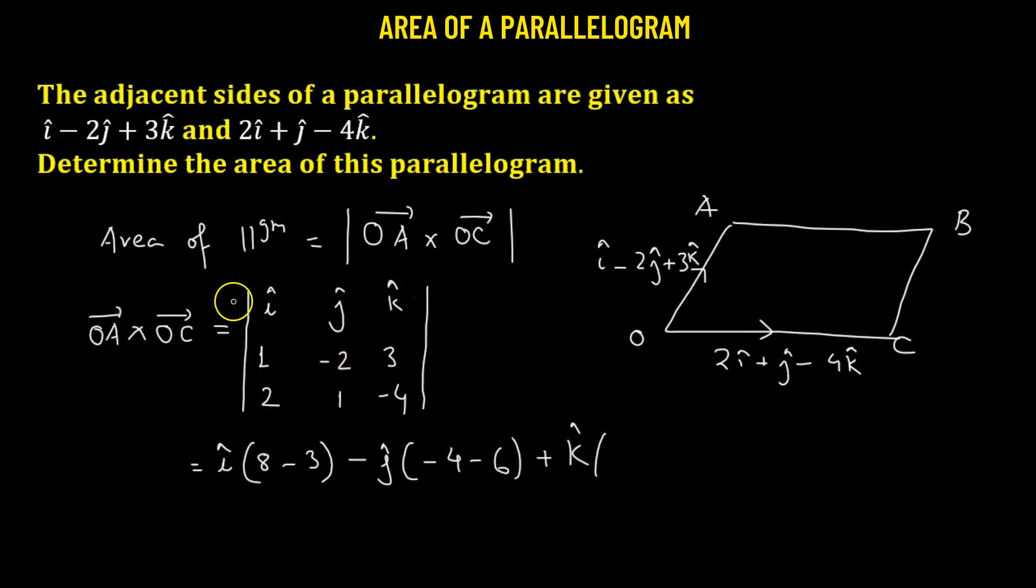Similarly, we reject the row containing k cap and the column containing k cap. So we're left with 1, negative 2, 2, 1. Cross multiply them, 1 times 1, so that's 1, minus negative 2 times 2, so that's negative 4, so we'll have positive 4.